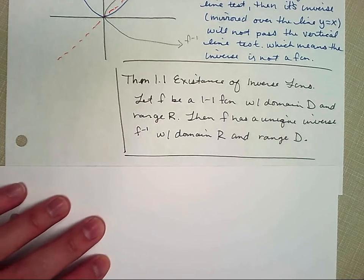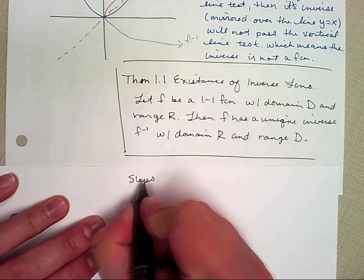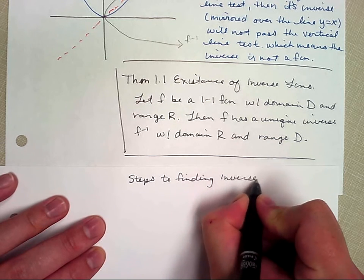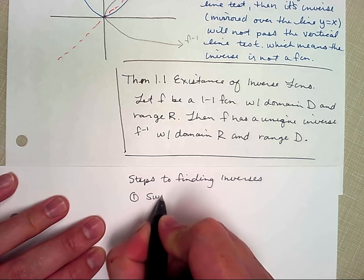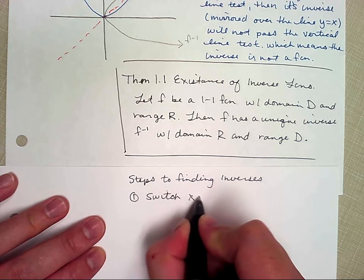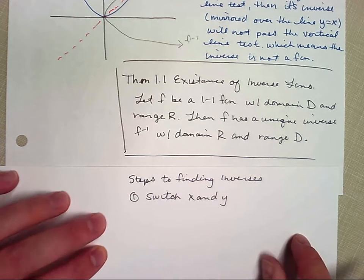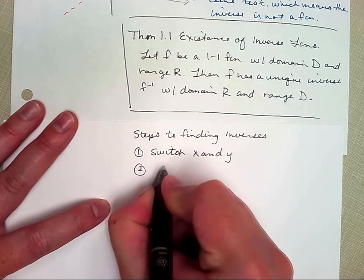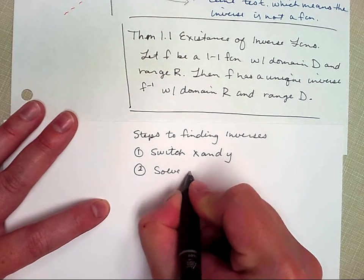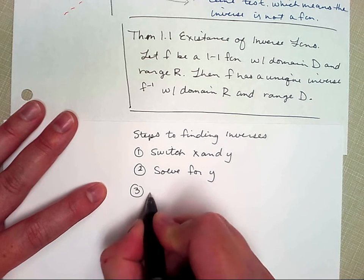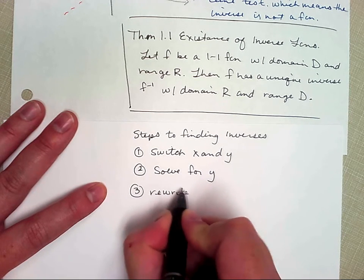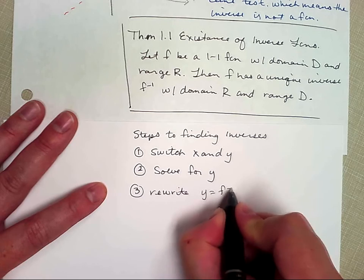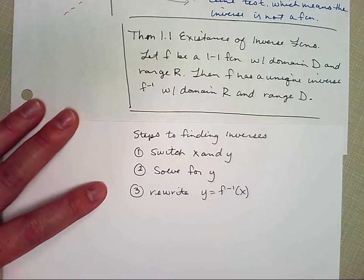So now let's talk about the steps to solving. So the first step, Josh already told us, is switch X and Y. And that tells us graphically we're mirrored over the line Y equals X, right? Step two, solve for Y. Step three, rewrite. Rewrite Y as F inverse. Okay? So those are the steps.